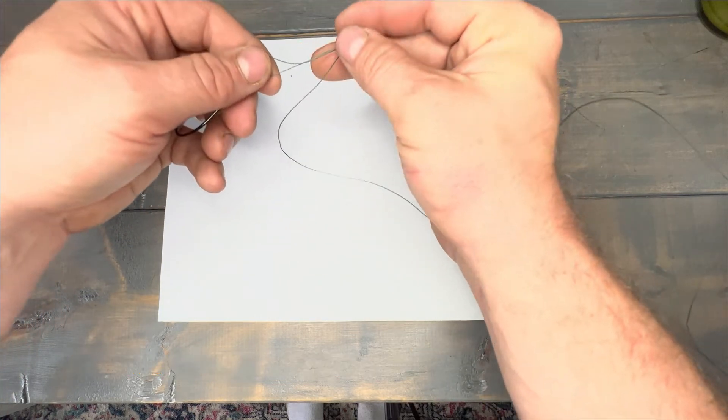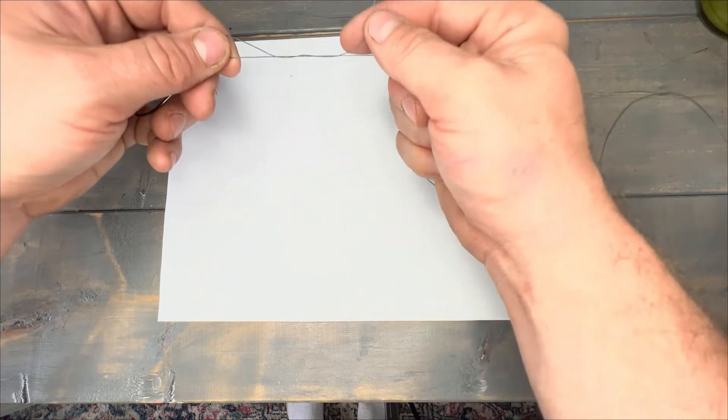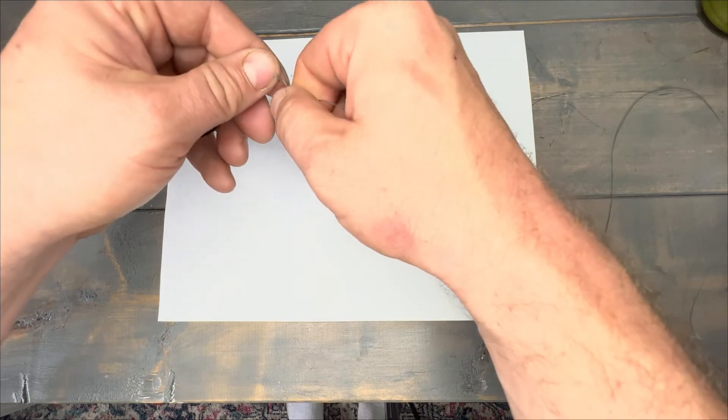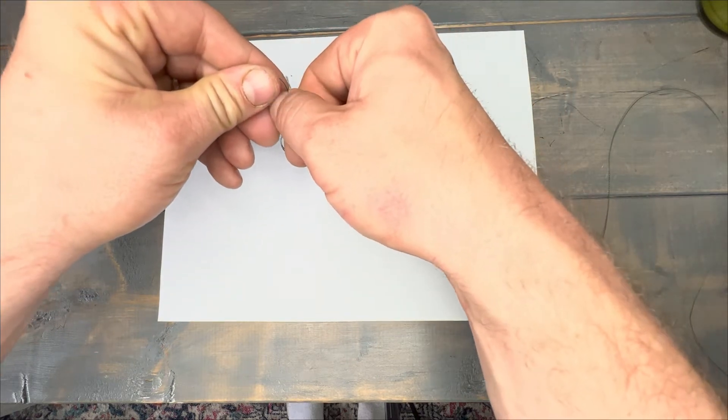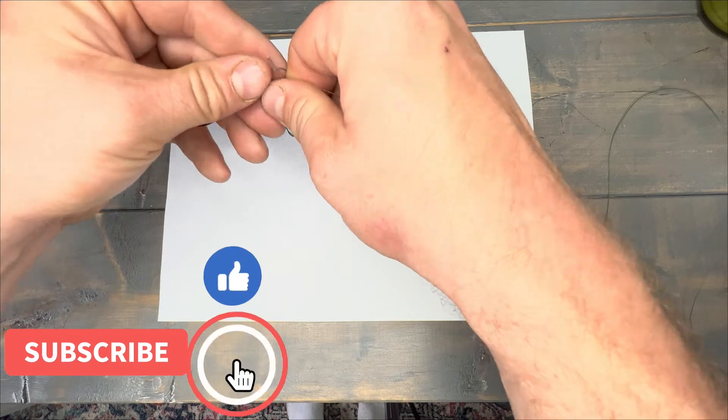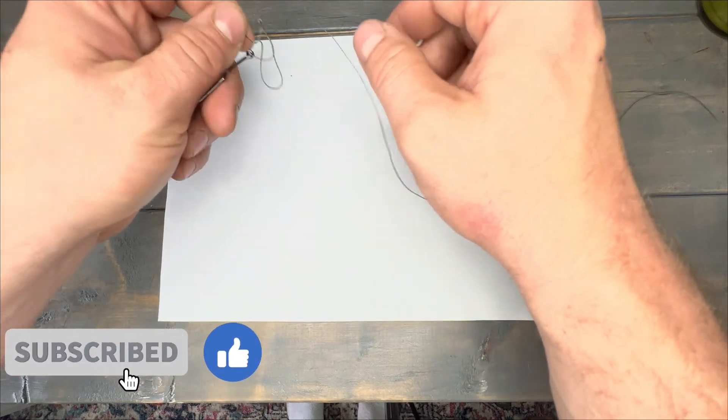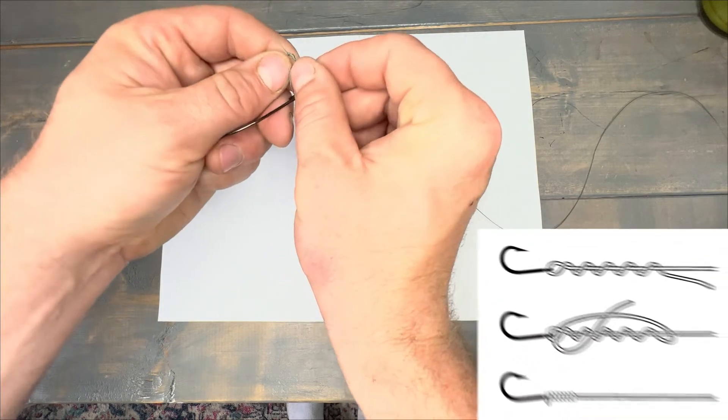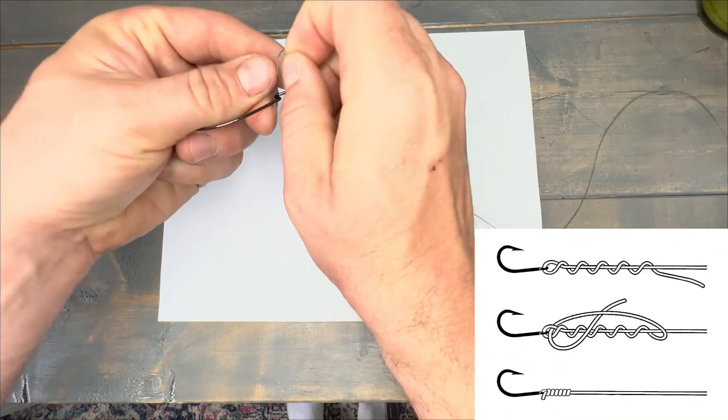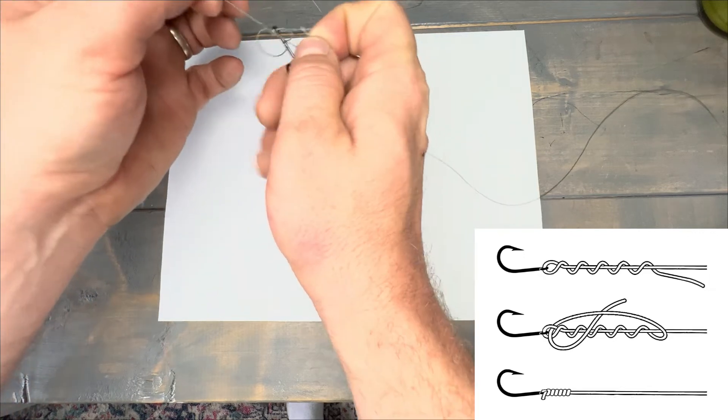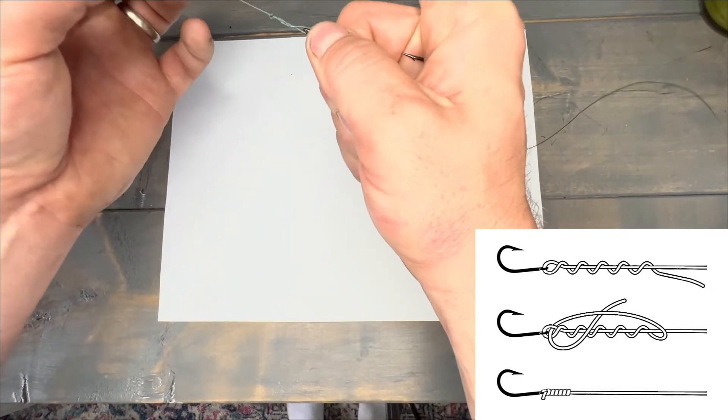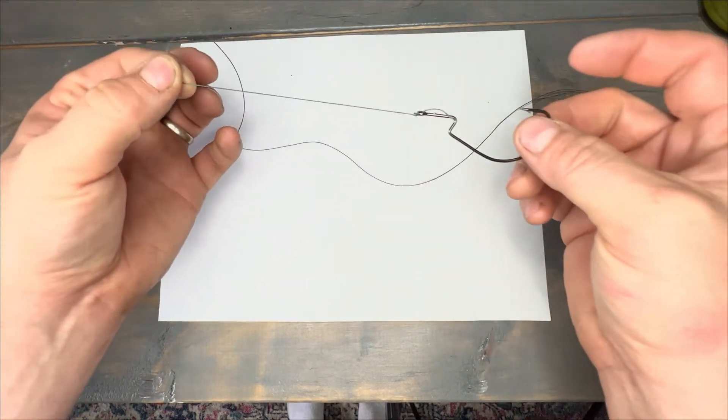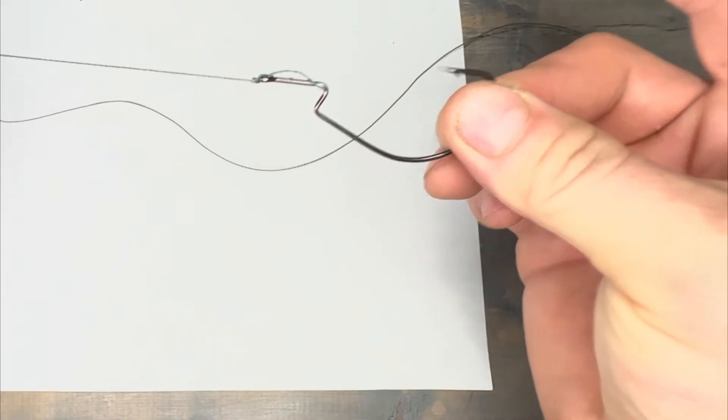All you do is make that loop and wrap the line around itself five to six times. You pass that tail through this loop at the beginning, and instead of pulling it tight yet, you put it through that loop one more time and then get it wet. I'm just not going to get it wet to show you. Then you pull it tight and there you go. That's your improved clinch knot.